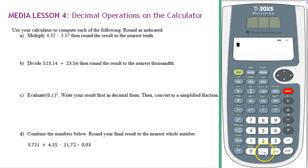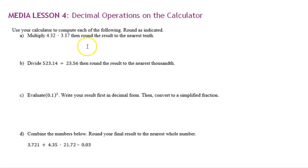Notice the decimal point is here, so I have 4.32. The multiplication symbol looks like an asterisk, times 3.17. I'm going to hit enter. Now it asks us to round the result to the nearest tenth. So here's the tenths place, there's the hundredths. This is greater than 5, so I'm going to round to 13.7.